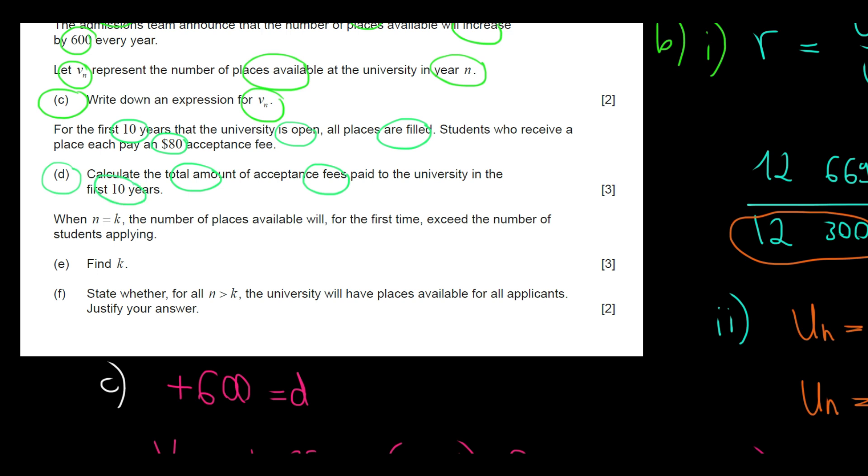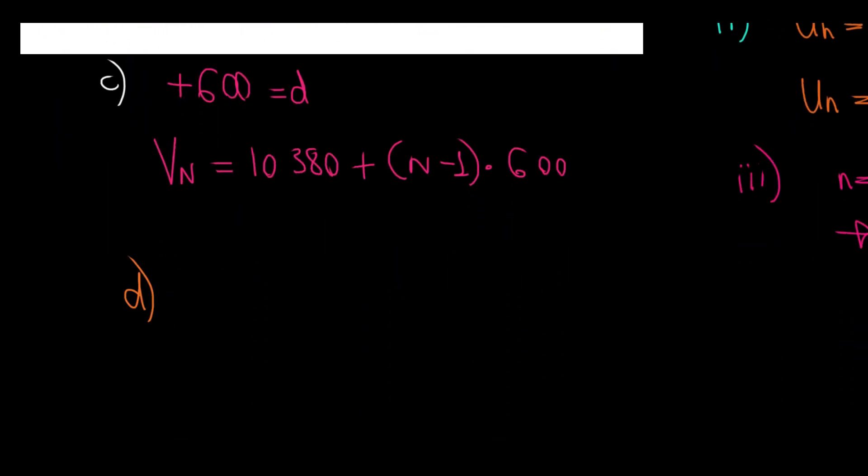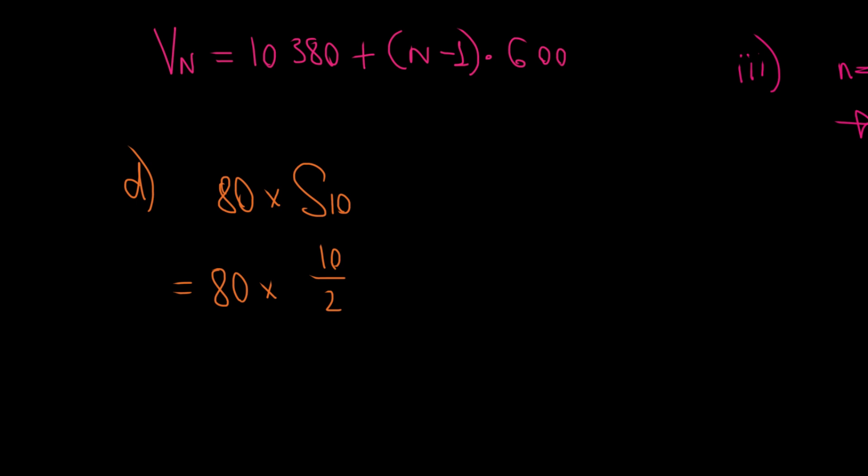Okay. So we have a total number of students for 10 years. That number gets multiplied by 80, which is the acceptance fee. So we know that we're going to multiply the $80 fee with the total number of students that have been applicants to this university for the first 10 years, which is the sum of the first 10 terms. So we will have 80 times the sum of the first N terms is a formula on the booklet, as always. No need to remember formulas, but you can look it up over there. So that's going to be 10 over 2 multiplied.